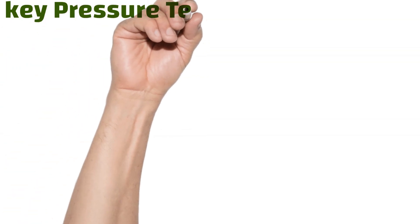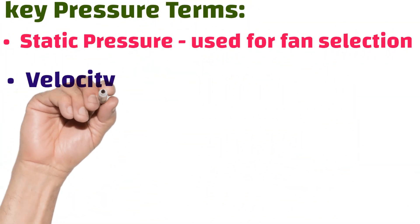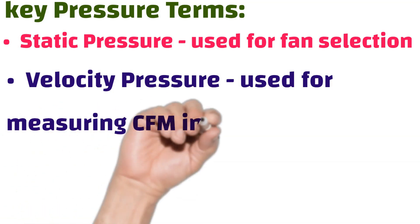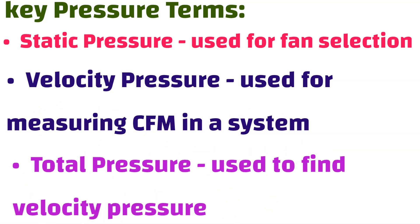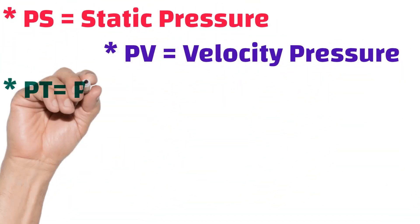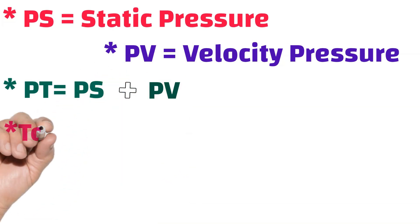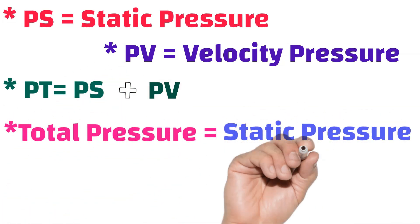Below are the key pressure terms. One: static pressure, used for fan selection. Two: velocity pressure, used for measuring CFM in a system. Three: total pressure, used to find velocity pressure. PS equals static pressure, PV equals velocity pressure, PT equals PS plus PV — total pressure equals static pressure plus velocity pressure.